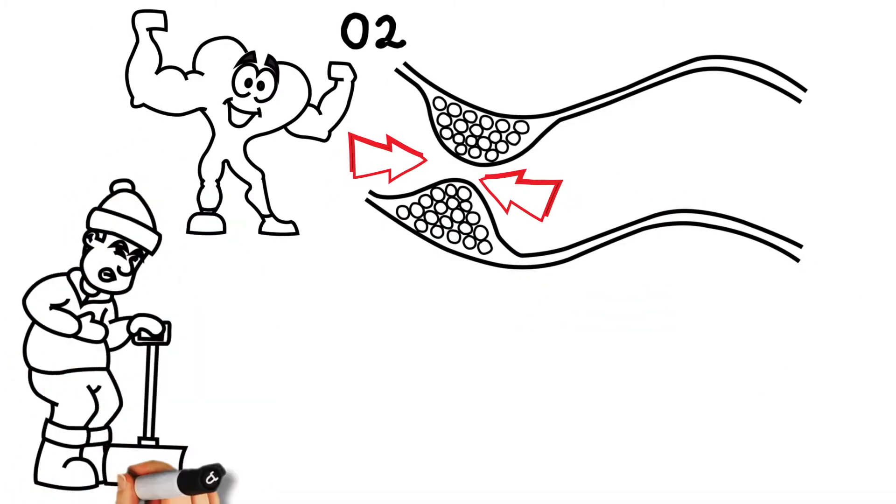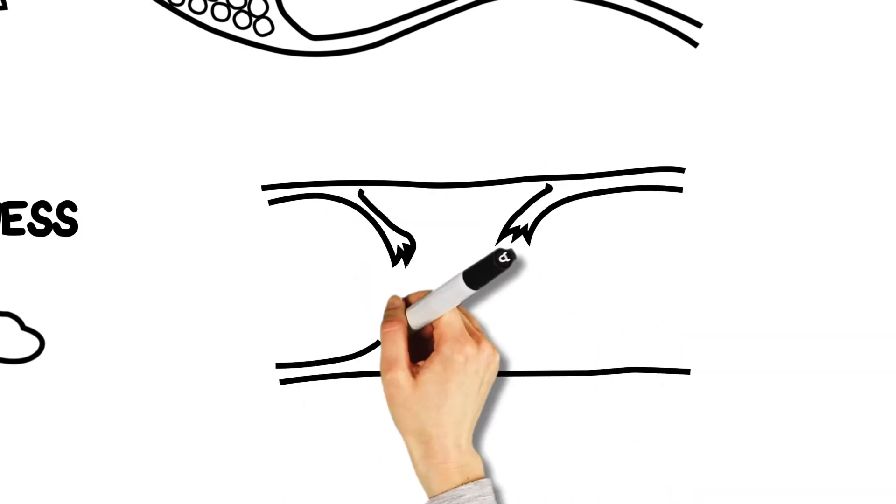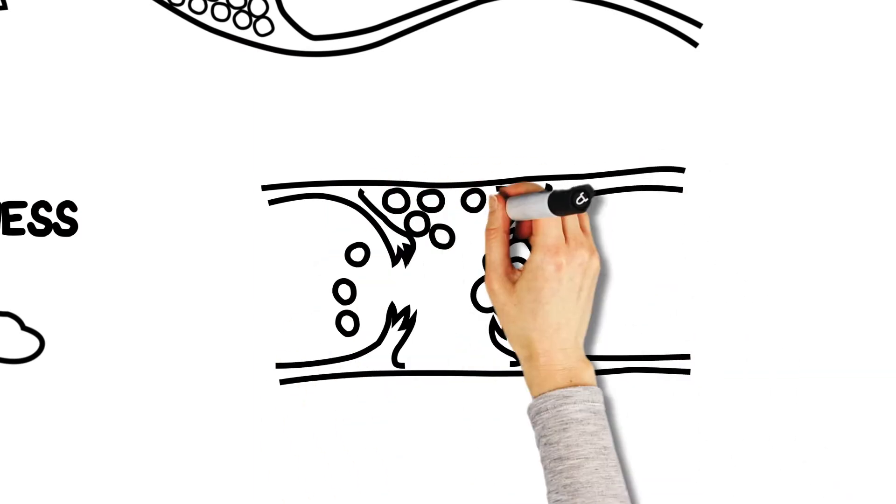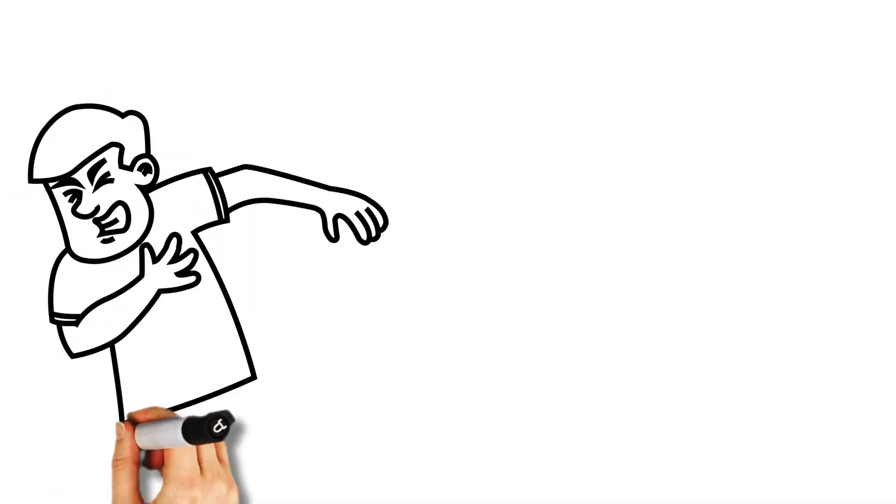This results in angina, which might feel like chest heaviness, pain or pressure. The blockage can also break or tear, causing a clot to form, stopping blood and oxygen from reaching parts of the heart. If this happens, a heart attack may occur.